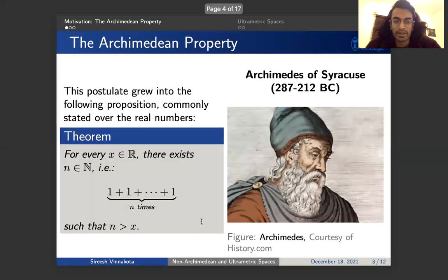So the Archimedean property was born, it was kind of formalized later on that given a real number, there exists a natural number, so that if you add one to itself that many times, or if you just consider the natural number that is one added that many times, you can find a natural number such that n exceeds x.